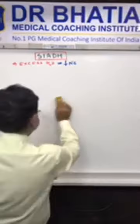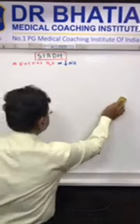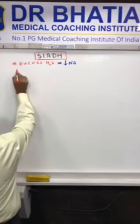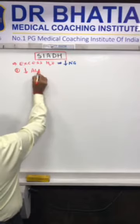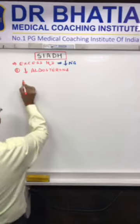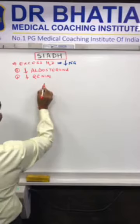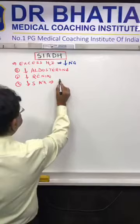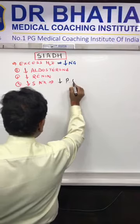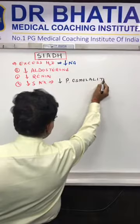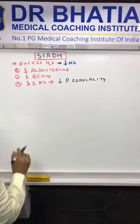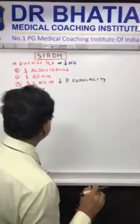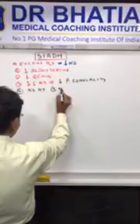The net result of this excess water includes: number one, reduced aldosterone level; number two, reduced renin level; and reduced serum sodium, which leads to reduced plasma osmolality. Importantly, there is no hypertension because sodium is not increased, and one classic exam point — there is no edema.